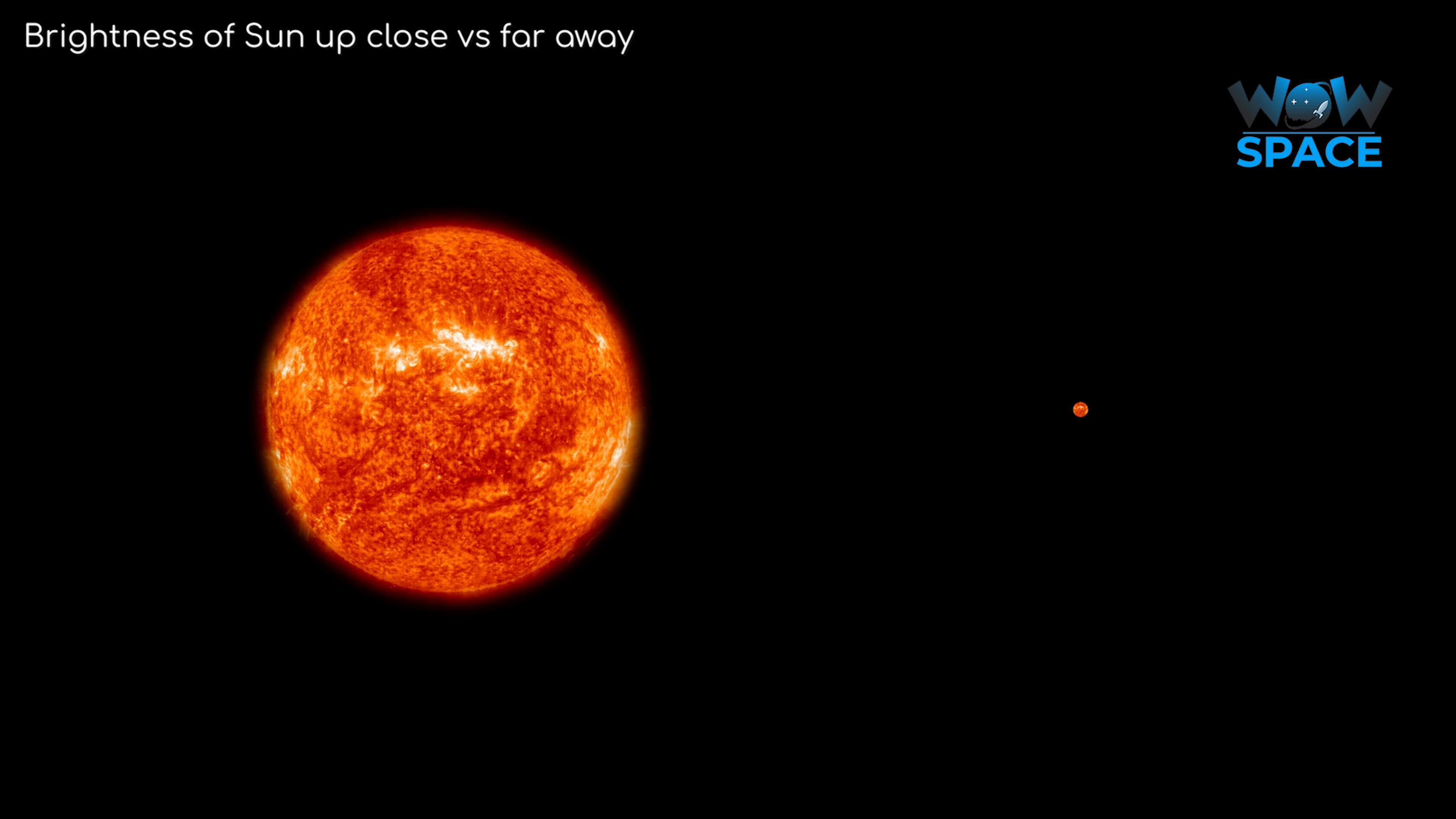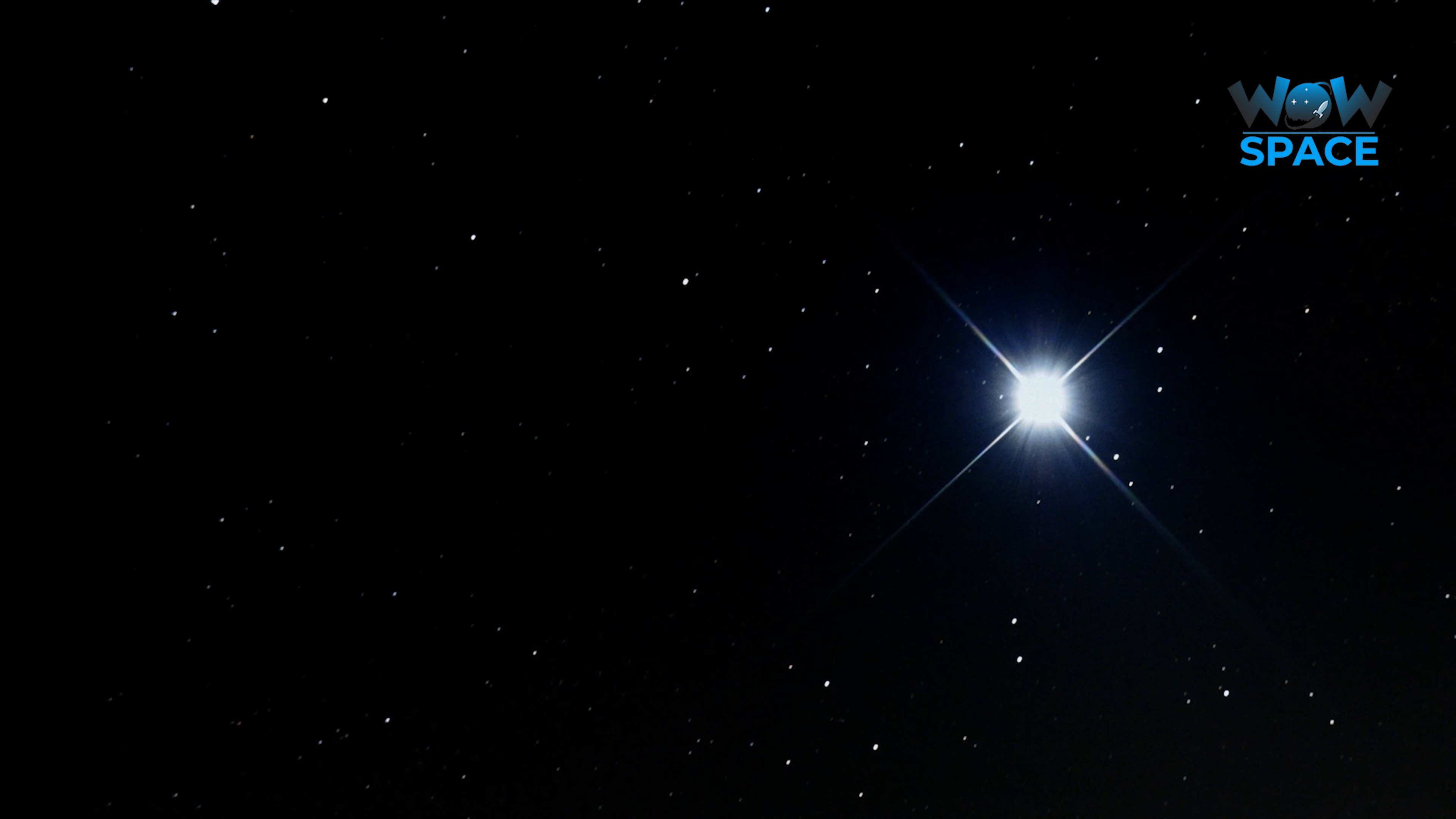Using stars that have a confirmed distance thanks to the parallax method, we can see how much a star dims due to the distance between it and us, and extrapolate that far beyond 400 light years.